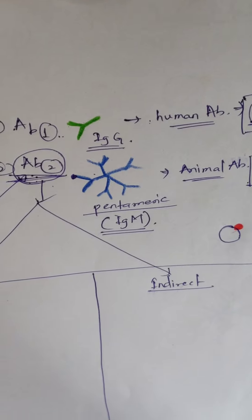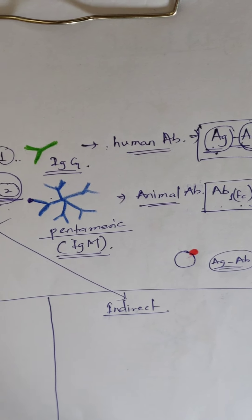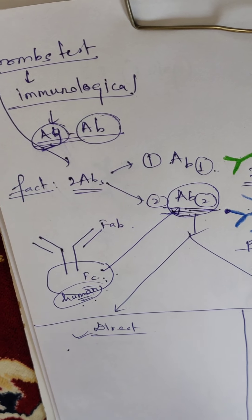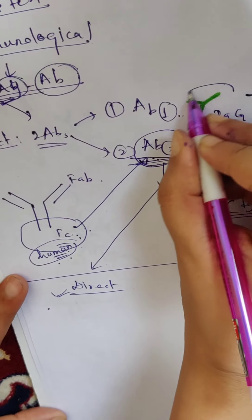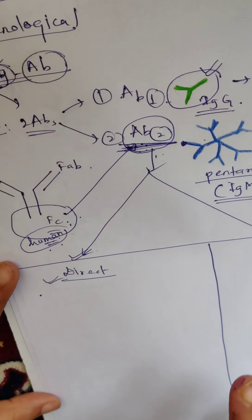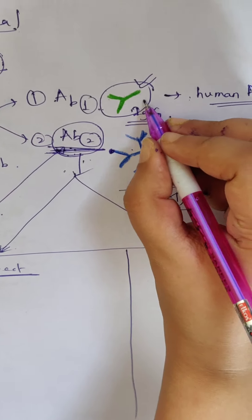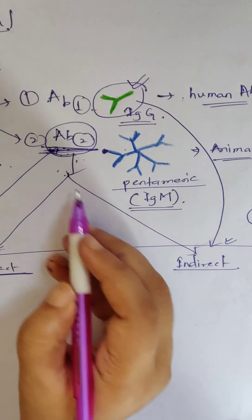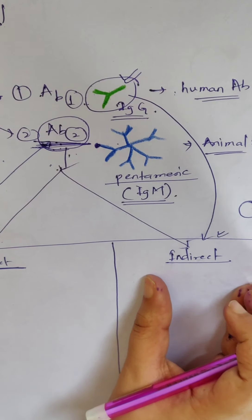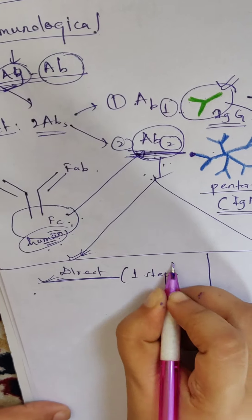The antigen-antibody interaction we cannot see with the naked eye, so to visualize it we form clumps — that is an agglutination reaction. If we add antibody 2 and get agglutination in the first step, that means it is a direct reaction. If we don't get any reaction from antibody 2 alone, it will follow an indirect path and we also have to add antibody 1. So the direct test is a single-step procedure, whereas the indirect test is a two-step procedure.